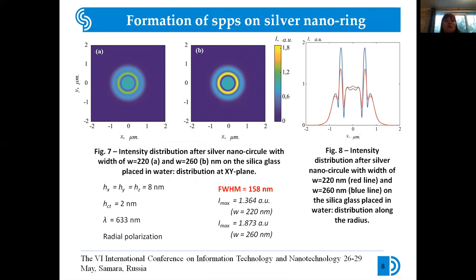As we can see on figure 7, a central plasmon polariton is formed on the nano-ring. The maximum plasmon intensity on the surface of a ring with a width of 260 nm was 1.87 relative units. And at the same time, it is higher than the maximum plasmon intensity on the surface of a narrow ring, which amounted to 1.34 relative units.